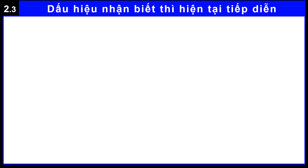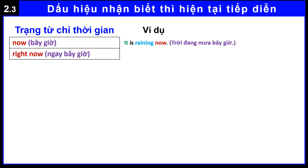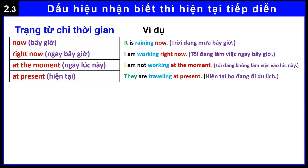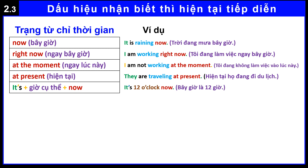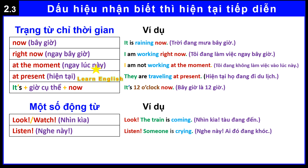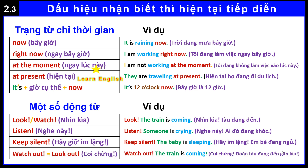Present continuous tense identification signs. Adverbs of time: now, right now, at the moment, at present. For example: It is raining now. I am working right now. I am not working at the moment. They are traveling at present. It's 12 o'clock now. Some signal verbs: look — look, the train is coming. Listen — listen, someone is crying. Keep silent — keep silent, the baby is sleeping. Watch out — watch out, the train is coming.